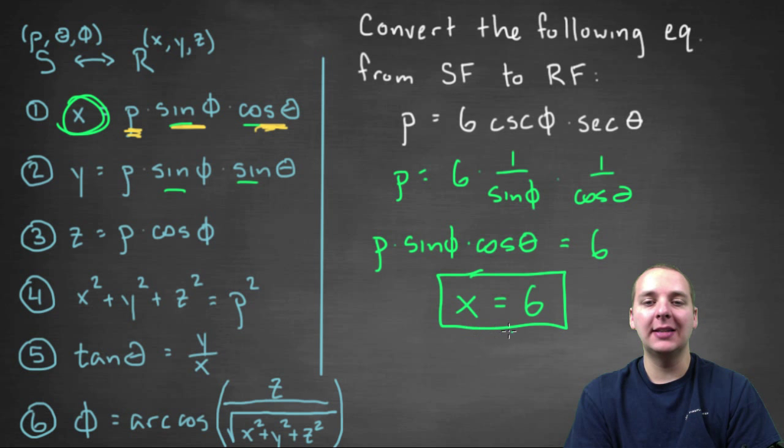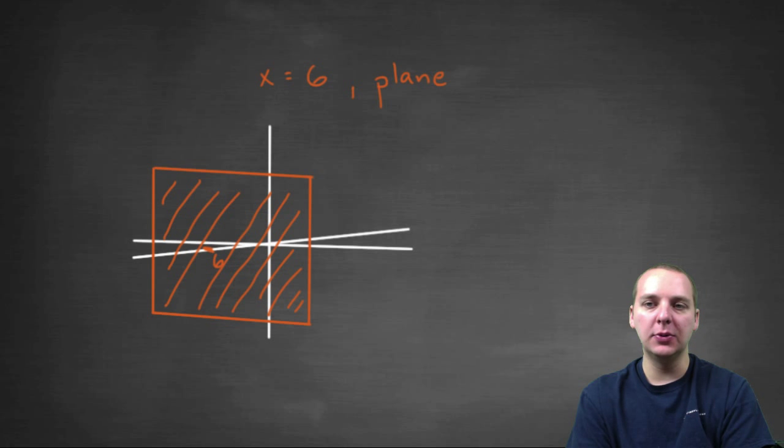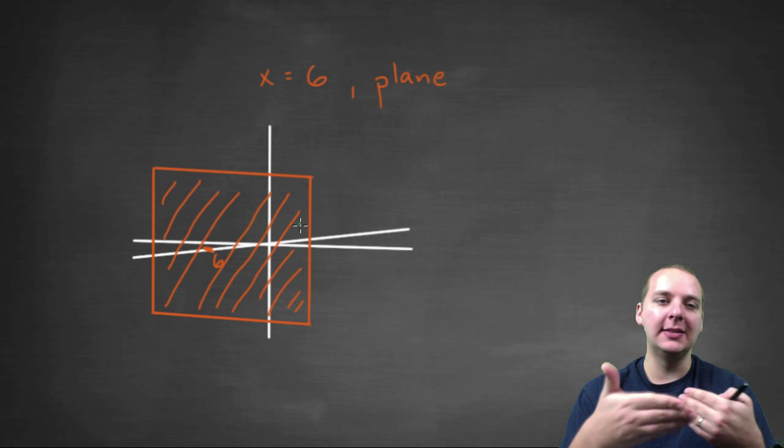Alright, now what is this? What x equals six in space, what would that even represent? Well in three dimensional space, x equals six would be a plane. It would be parallel to the y, z plane.